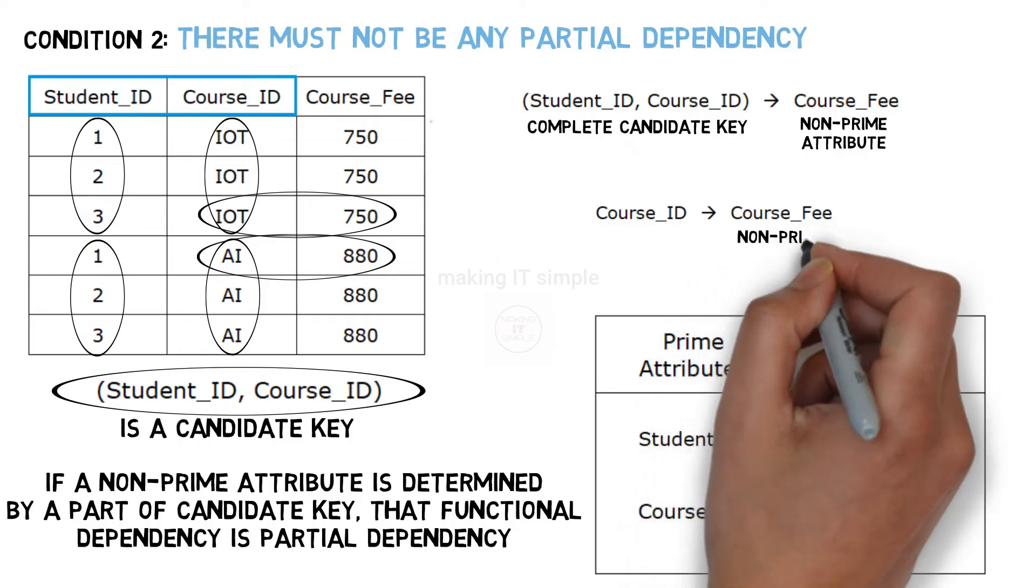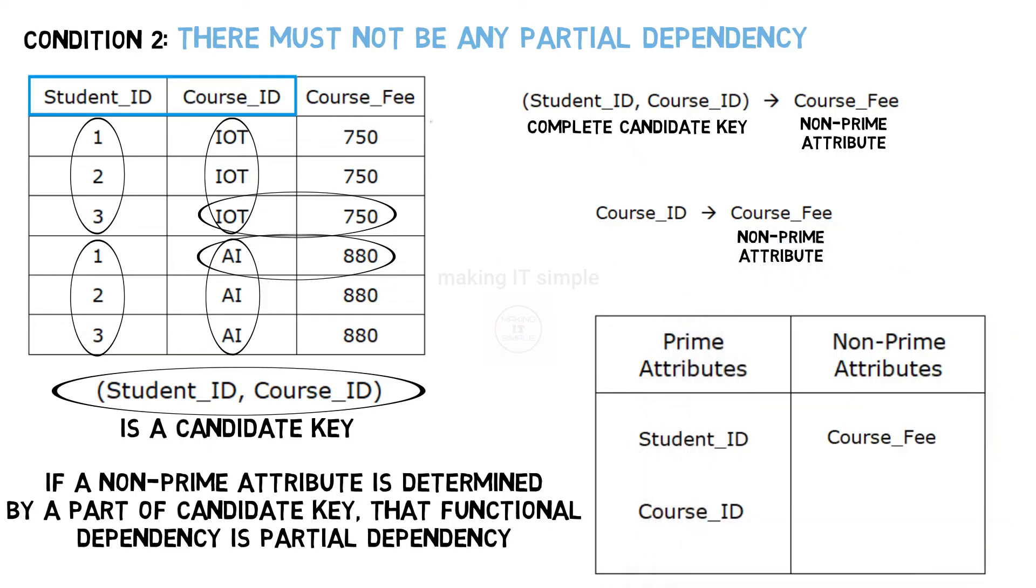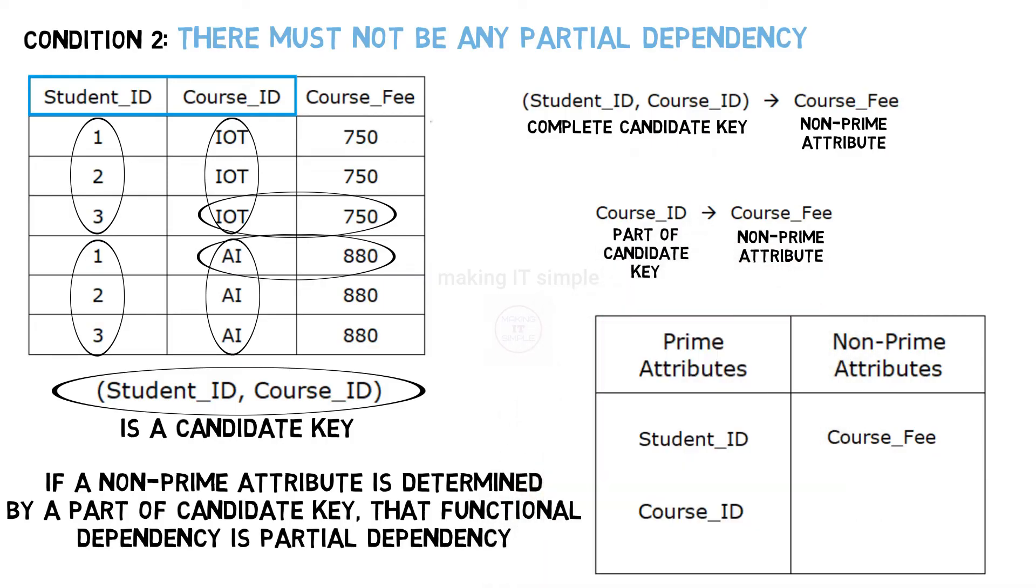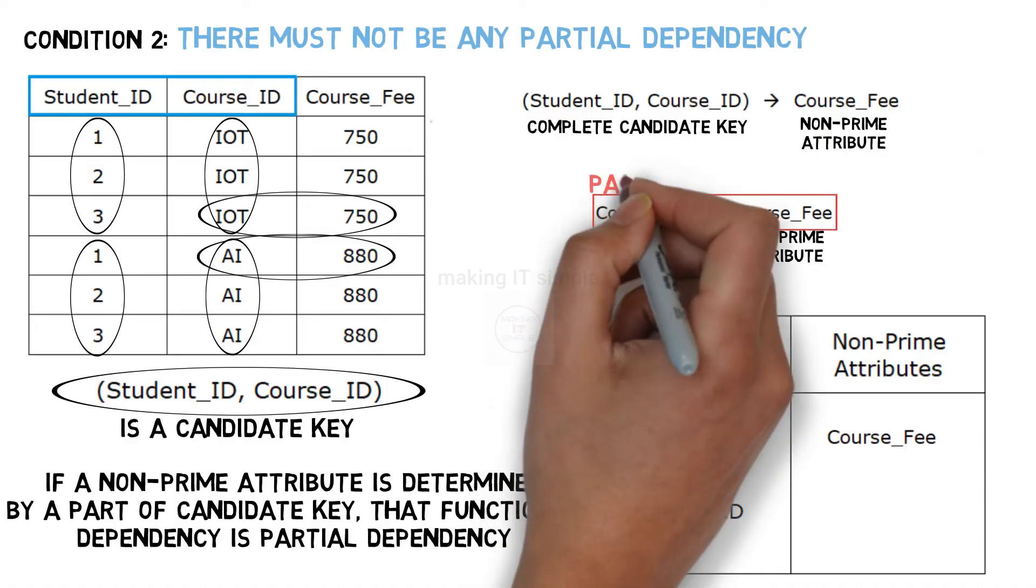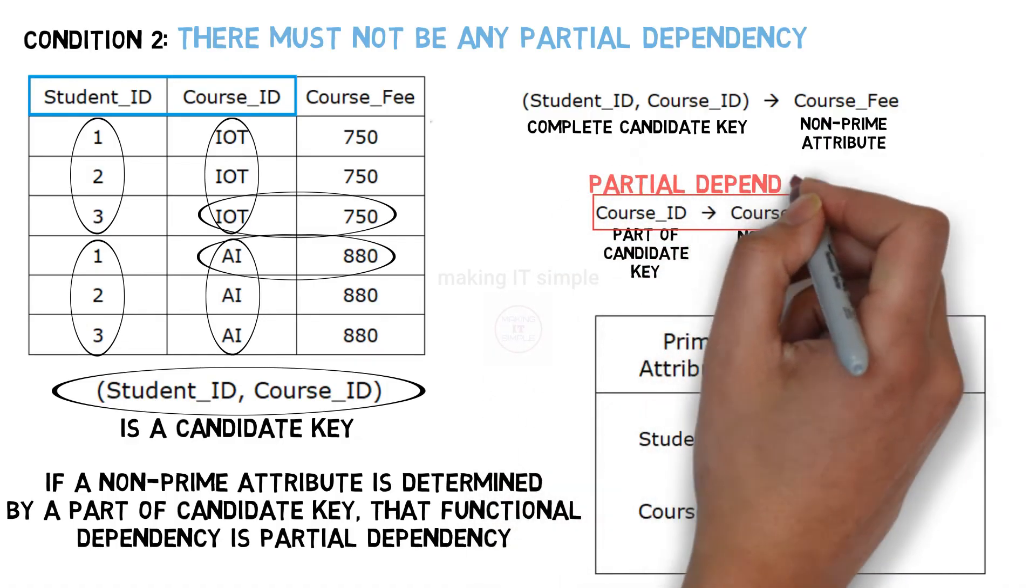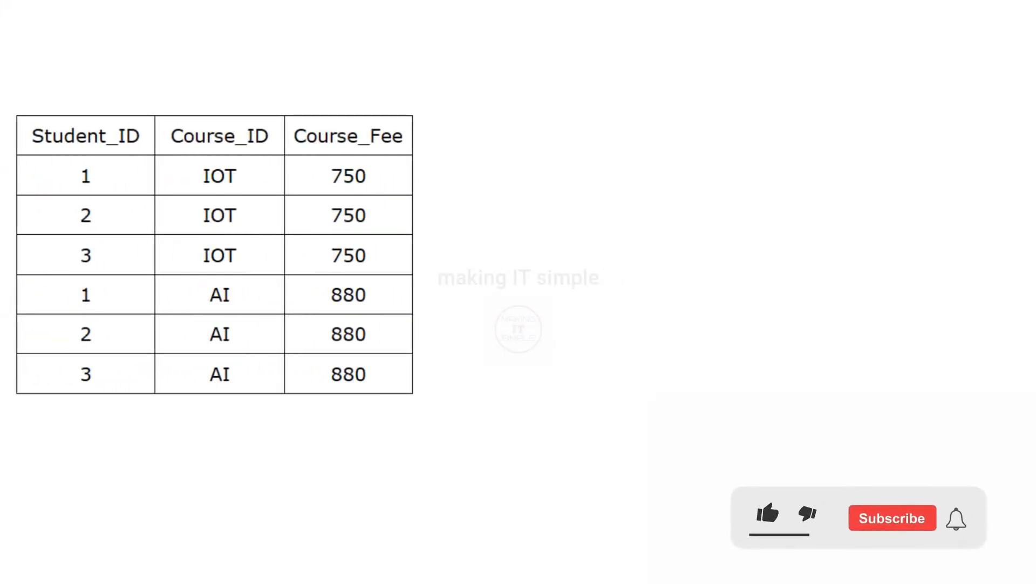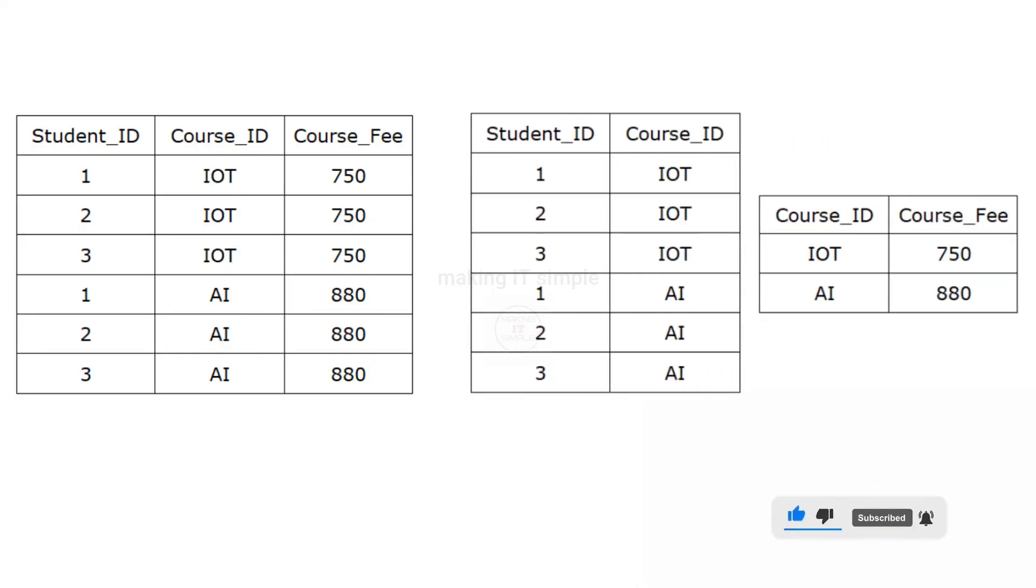Now in this case, a non-prime attribute course fee is determined by part of candidate key that is course id. So this functional dependency over here is a partial dependency and while this is present table cannot be in the second normal form. So we found partial dependency in this table. To eliminate this partial dependency we will split this one table into two.